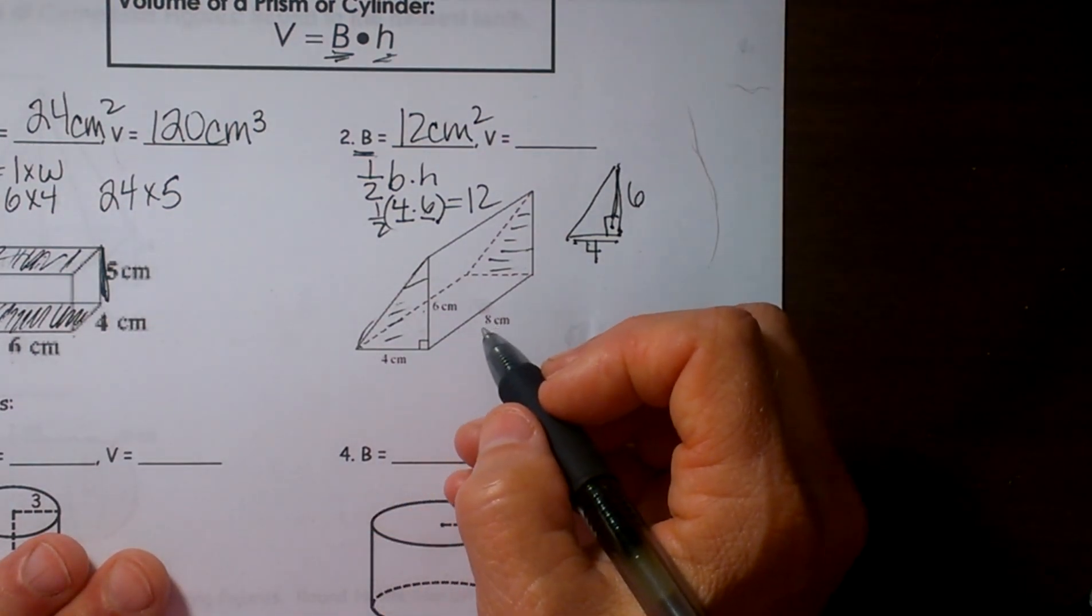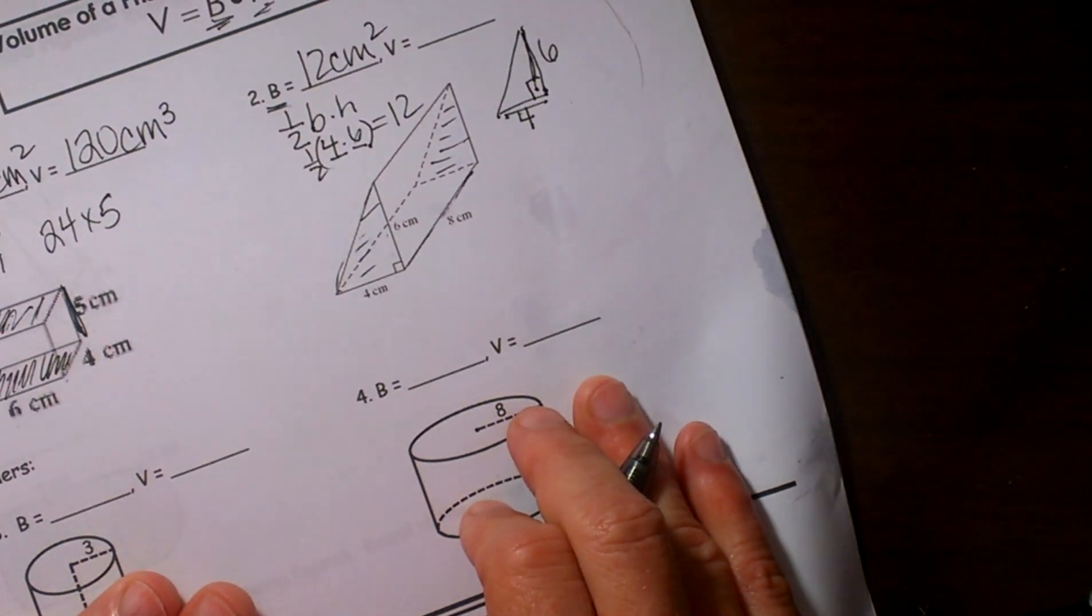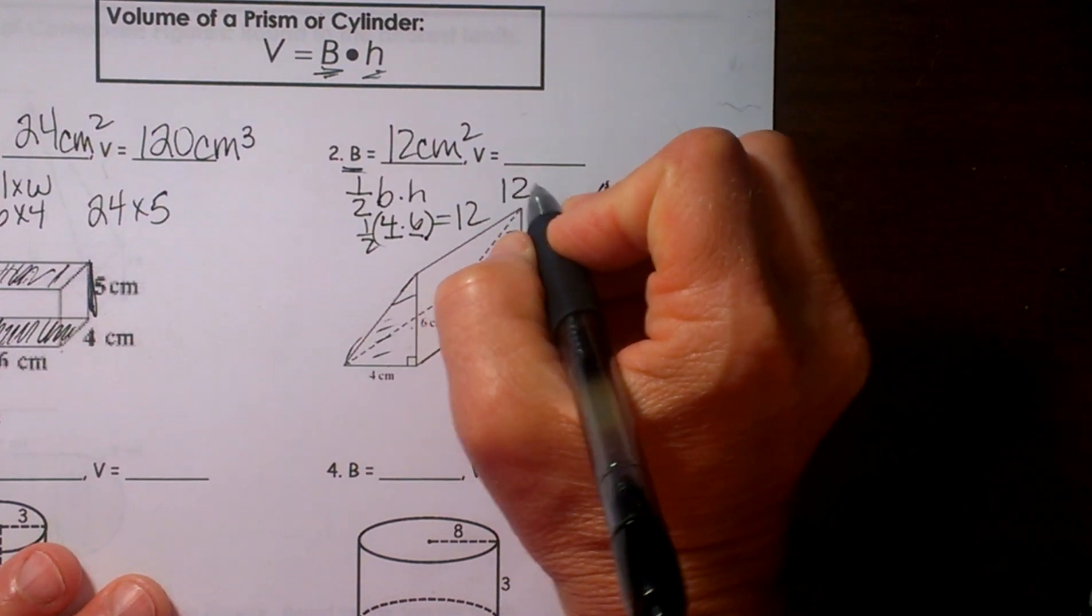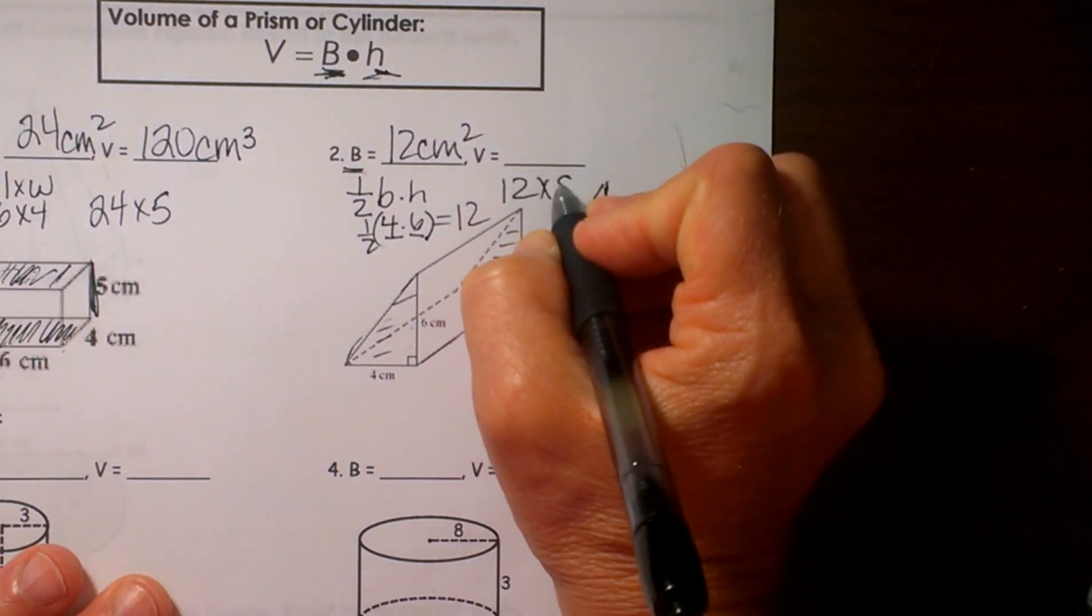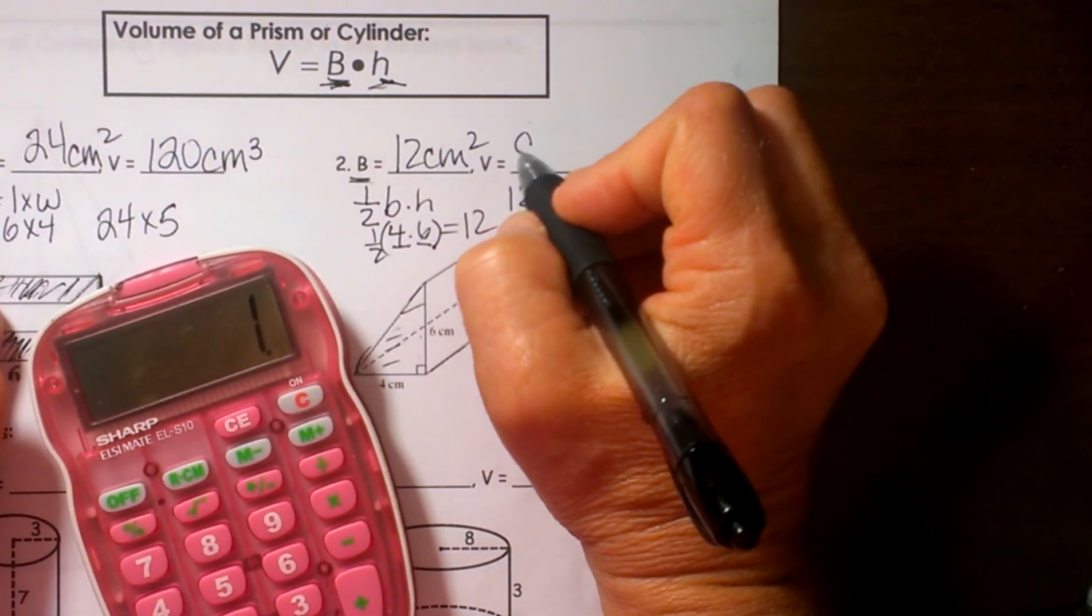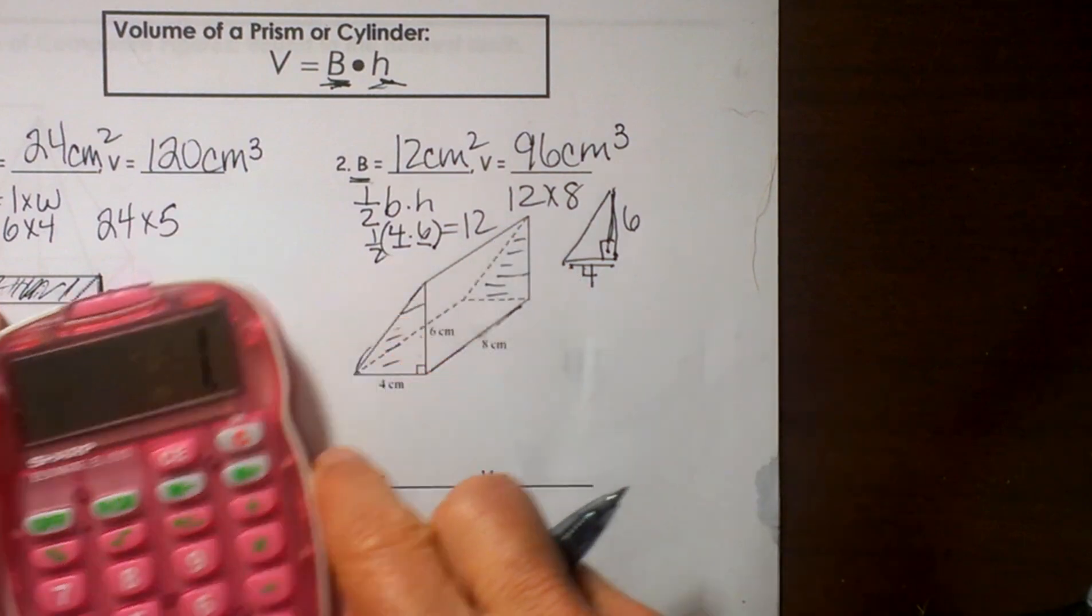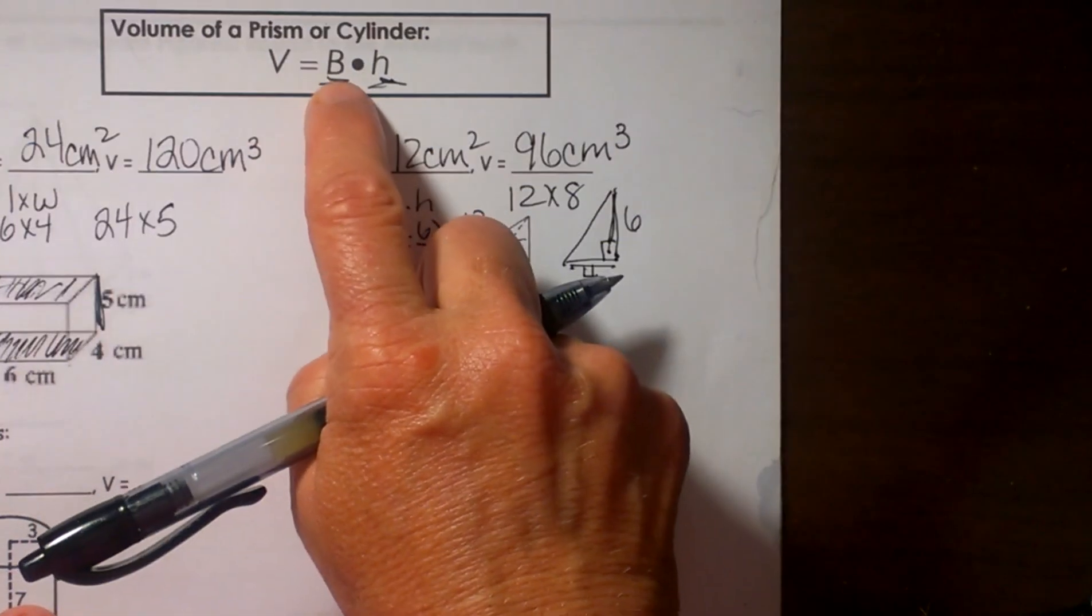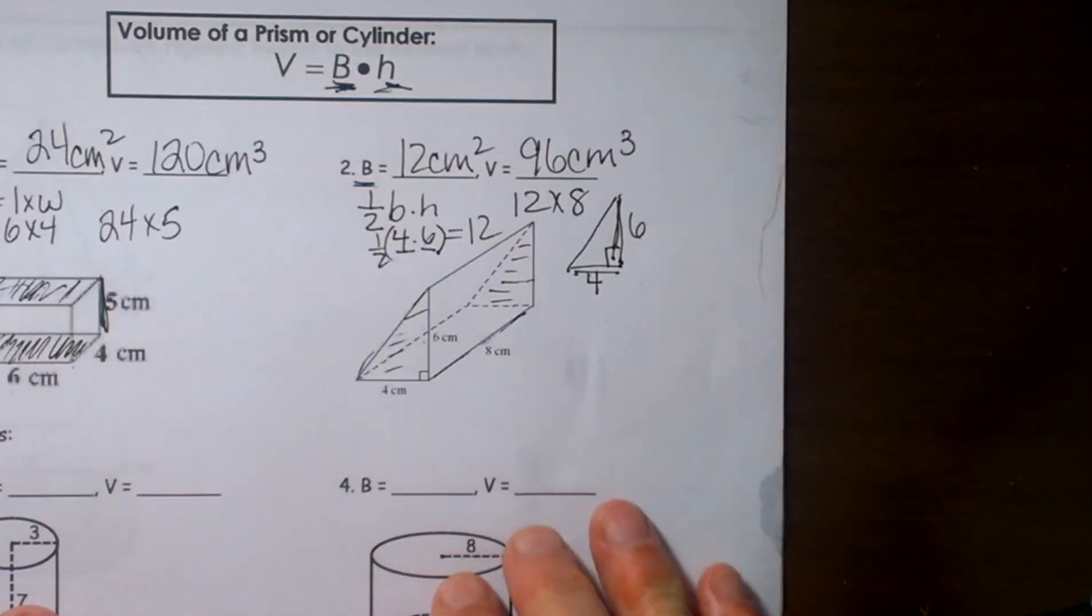Well because this pyramid is on its side sometimes you want to turn your paper so you can see it but this is the height of the pyramid. So we are going to take the base area again. Take your base area times the height of the pyramid 8 times 12 and that is 96 cubic centimeters. So that is how you would find the volume of a triangular prism. So whatever your base is plug in your area formula for your base then times the height of the pyramid.